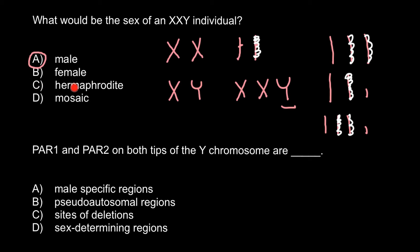And for example, answer C, hermaphrodite. This is a phenotype when a person has both sex organs of the male and female, and this is different from what we see here.